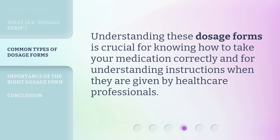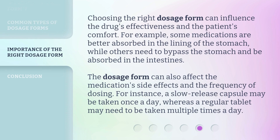Understanding these dosage forms is crucial for knowing how to take your medication correctly and for understanding instructions given by healthcare professionals. Choosing the right dosage form can influence the drug's effectiveness and the patient's comfort. For example, some medications are better absorbed in the lining of the stomach, while others need to bypass the stomach and be absorbed in the intestines. The dosage form can also affect the medication's side effects and the frequency of dosing — for instance, a slow-release capsule may be taken once a day, whereas a regular tablet may need to be taken multiple times a day.